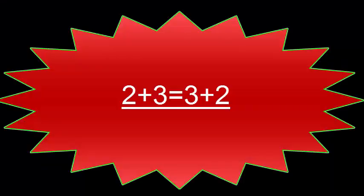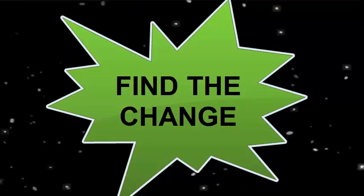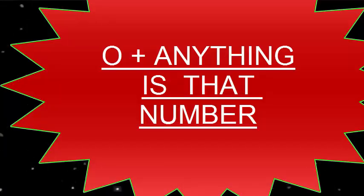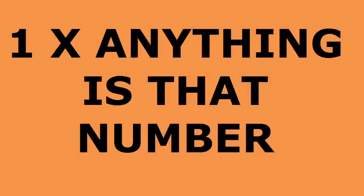About how many in all? About how many more? 2 plus 3 equals 3 plus 2. 4 times 7 equals 7 times 4. 0 plus anything is that number. 1 times anything is that number.